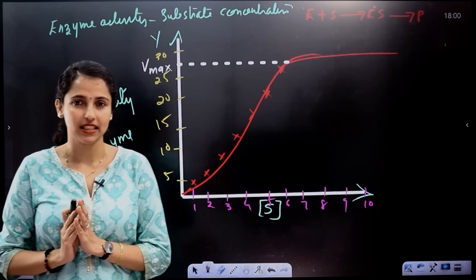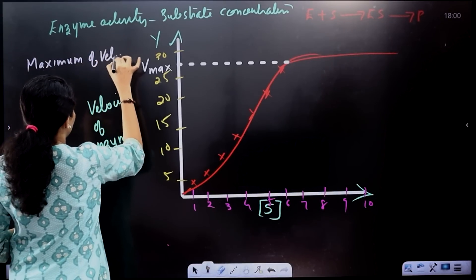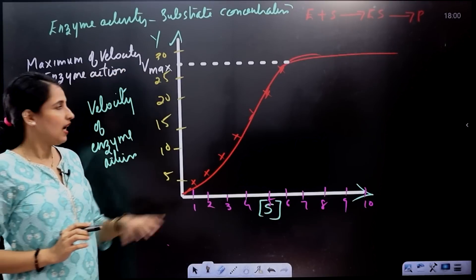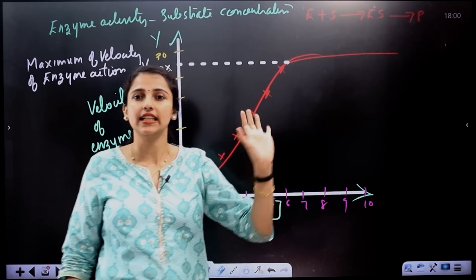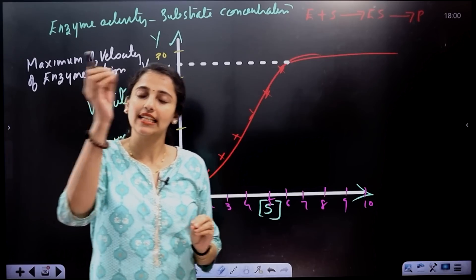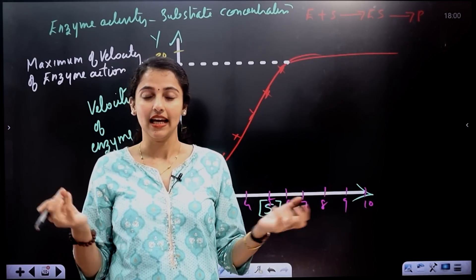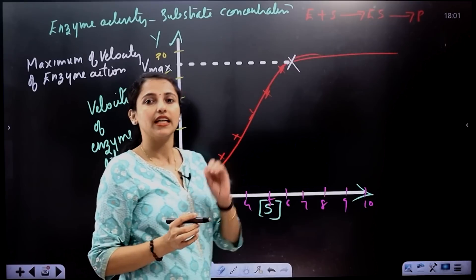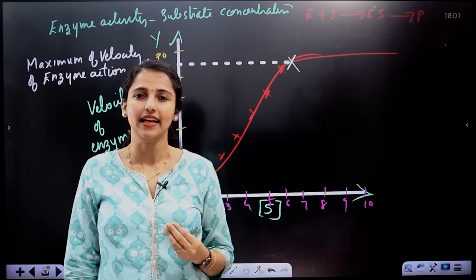VMAX is the maximum enzyme activity at that point. Maximum velocity of enzyme activity is VMAX — VMAX is the maximum velocity of enzyme action. Beyond VMAX, if you add more substrate, there are very few enzymes left to bind with the substrate.